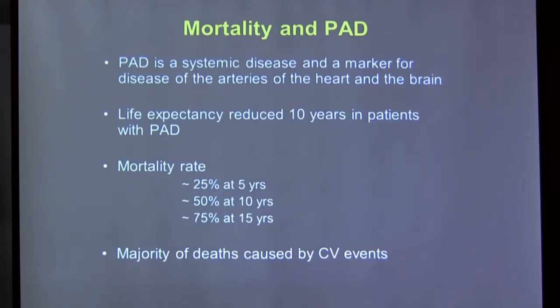PAD is a marker for systemic arterial disease — all arteries are essentially the same, so disease in one indicates disease throughout the body, including the heart. Patients with PAD have their life expectancy reduced by about 10 years and face a significantly higher mortality rate compared to those without it. The majority of deaths in PAD patients are from cardiovascular events — primarily heart attacks — not from leg complications.